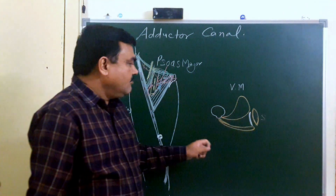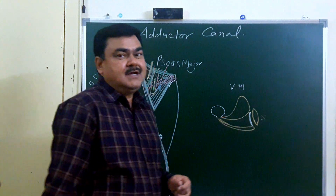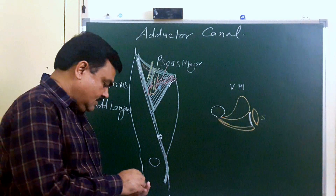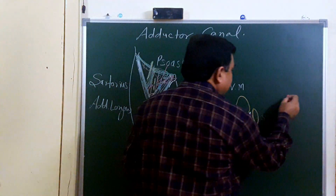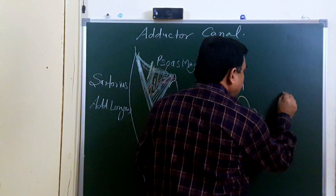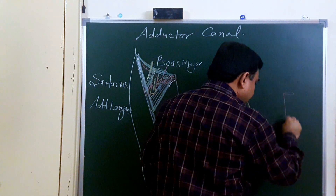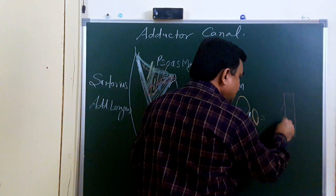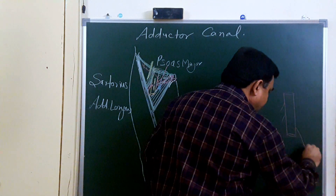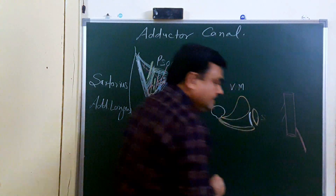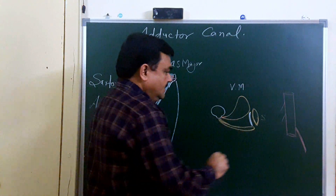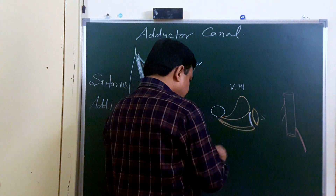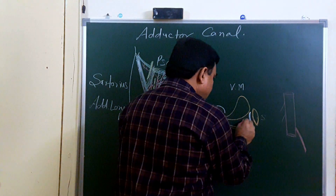The contents of the adductor canal are: the femoral artery with muscular branches and the descending genicular branch. This is the descending genicular branch, which is present here.